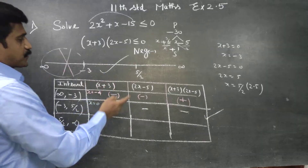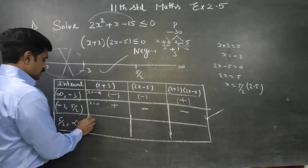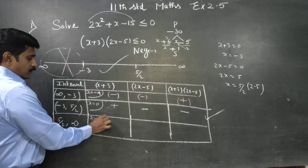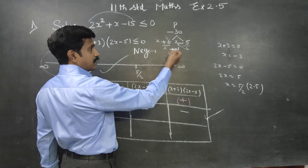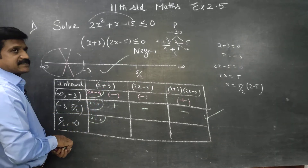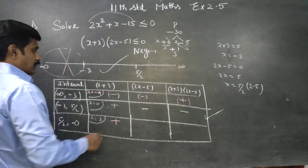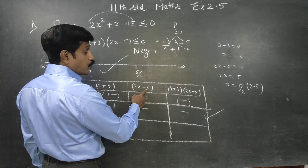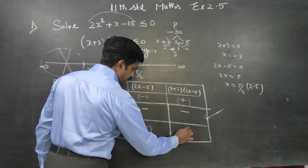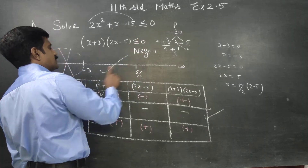Last check: for the third interval, test x = 3 (which is greater than 2.5). 3 + 3 = 6, which is positive. 2(3) − 5 = 6 − 5 = 1, again positive. Positive into positive is positive — we want only the negative answer, so this interval is rejected.